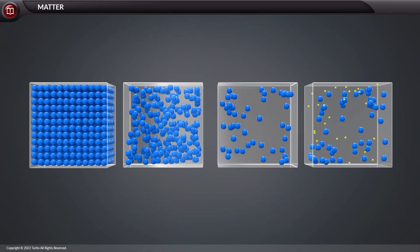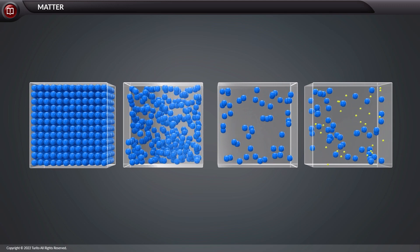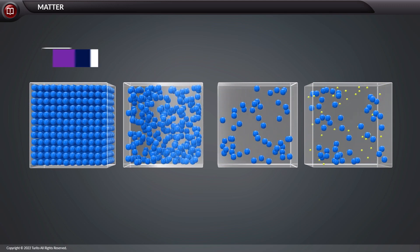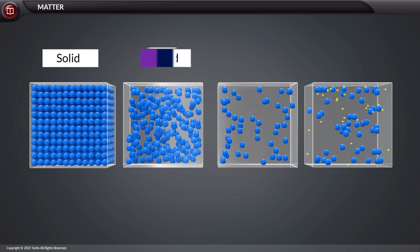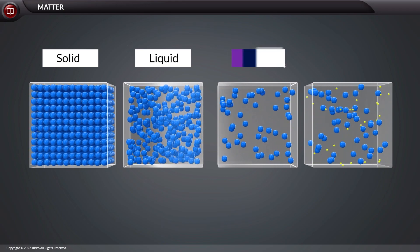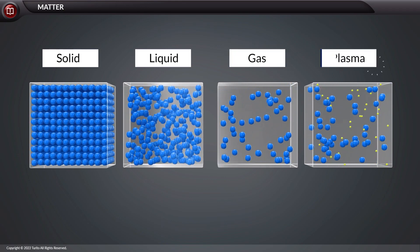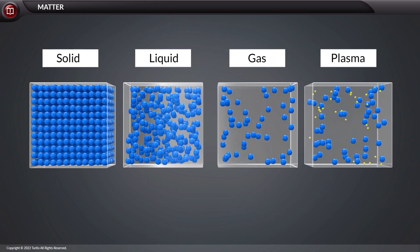Another important property of matter is that it can exist in different states. Solid, liquid, gas, and plasma. They all are interconvertible.